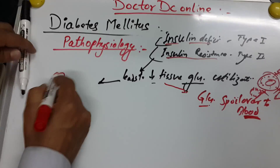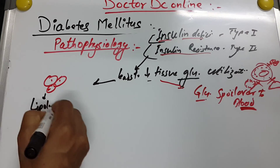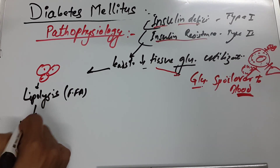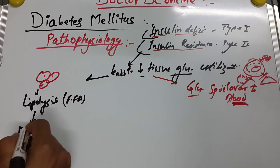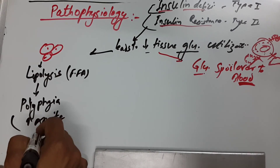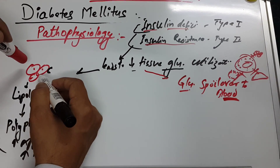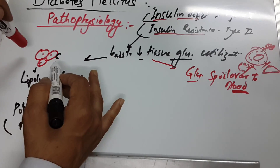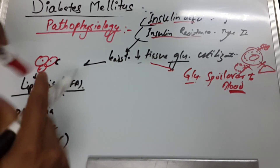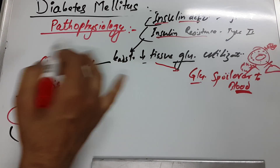In adipose tissue, what is happening? In the adipose tissue or fat cells, there is lipolysis — the formation of free fatty acids. Due to this, polyphagia occurs, meaning increased appetite or more hunger. Because glucose cannot enter the adipose tissue or fat cells, lipolysis occurs and triglycerides release free fatty acids. So one of the main symptoms occurring is polyphagia — more appetite and hunger.